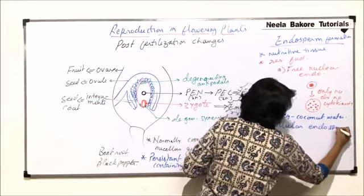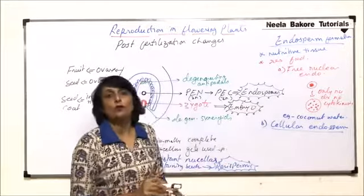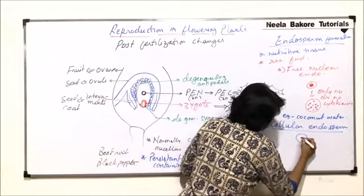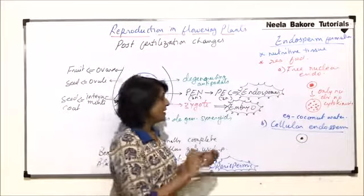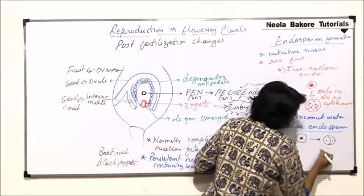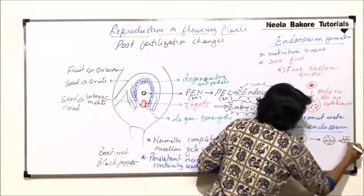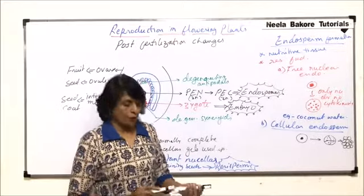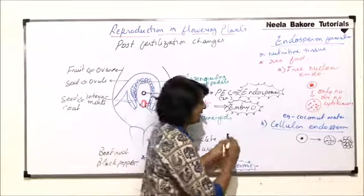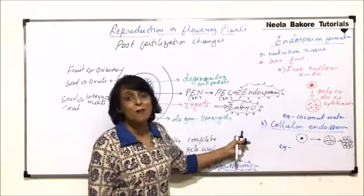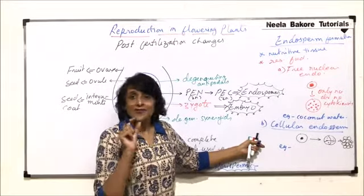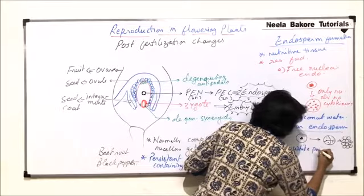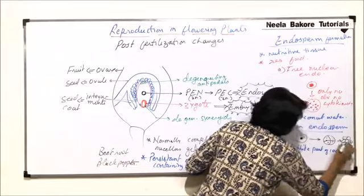The second type of endosperm is cellular endosperm. In cellular endosperm, division is normal — after every karyokinesis there is cytokinesis. So the primary endosperm cell divides into two cells with nuclei, then four cells, and ultimately a cellular mass is formed. All cells are triploid because division is mitotic. The example here is again coconut — the white edible part of coconut is cellular endosperm.